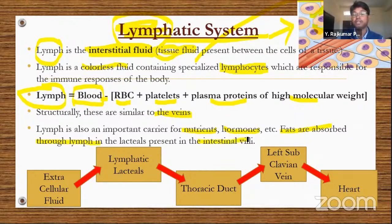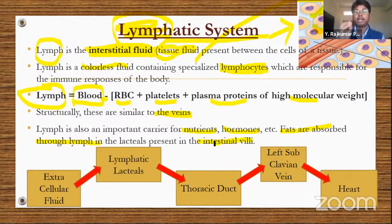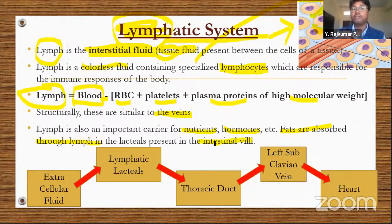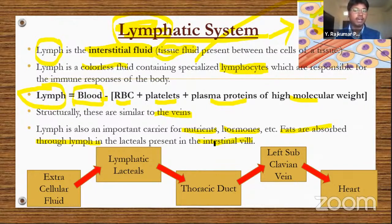Lymph is an important carrier for nutrients and hormones, and fats are mainly absorbed through lymph in the lacteals of the intestinal villi. Blood vessels have a closed circuit, but lymphatic vessels have dead ends in cellular spaces — hence the lymphatic system is called an open type of circulatory system. Lymph vessels are also called lacteals.